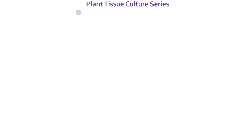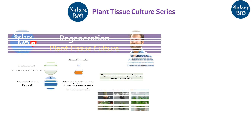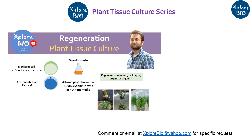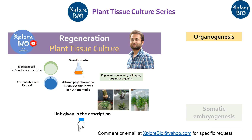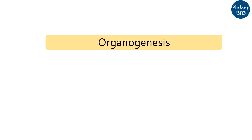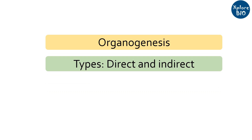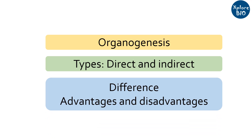Hello and welcome to the plant tissue culture series of Explore Bio. In my previous video I discussed regeneration in plants and how plant tissue culture helps to regenerate various plant tissues and even a whole new plant from meristem and differentiated cells. I also mentioned that regeneration occurs either by organogenesis or somatic embryogenesis. In today's video I will explain organogenesis and its types — direct and indirect organogenesis — along with the differences, advantages, and disadvantages. So let's begin.